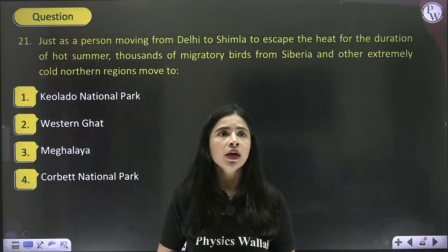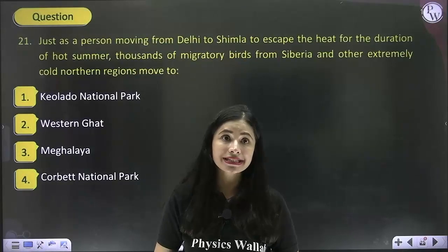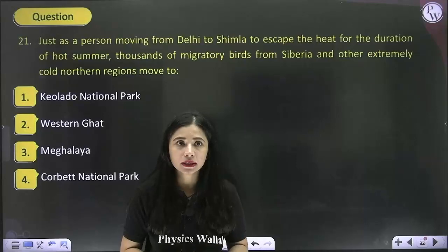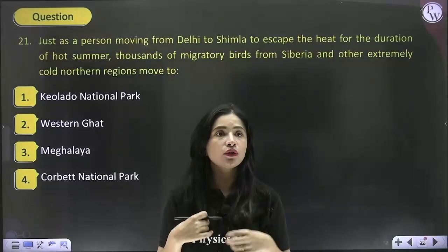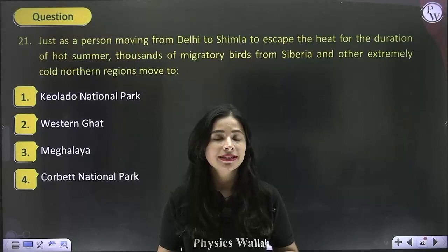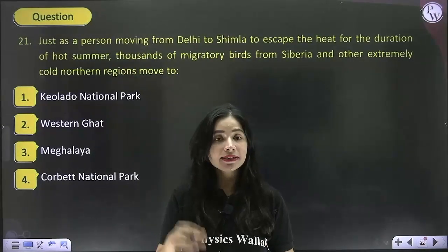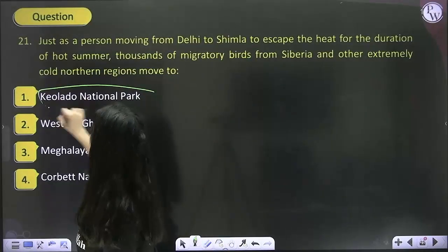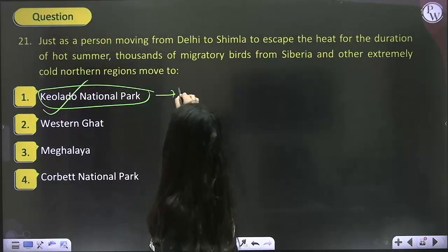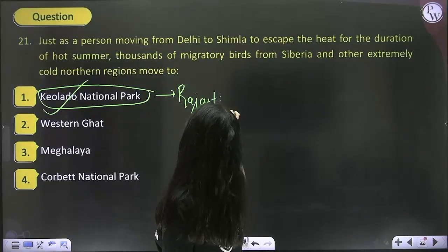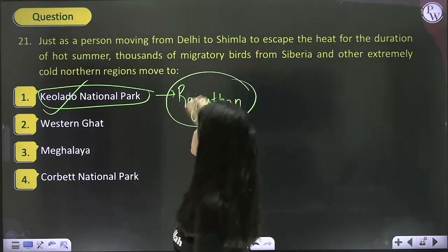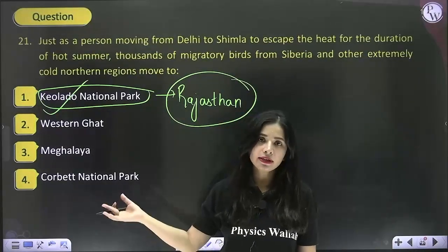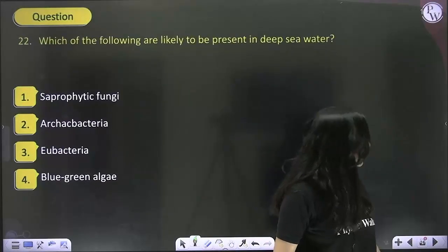Just as a person moves from Delhi to Shimla to escape the summer heat, thousands of migratory birds from Siberia and other extremely cold northern regions visit Bharatpur Sanctuary in Rajasthan — also called Keoladeo National Park. This is an example of migration. Simply remember this data.